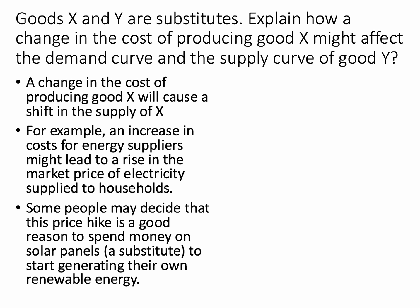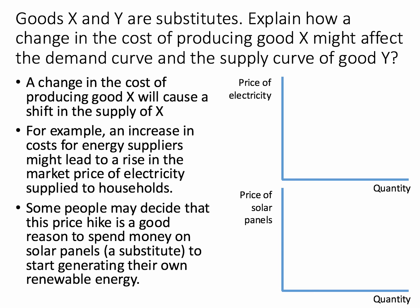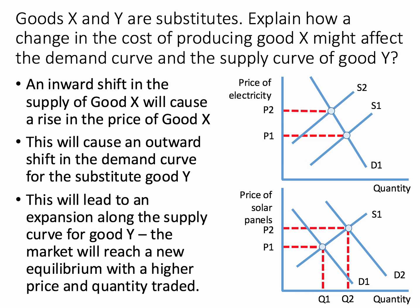Think about this in terms of diagrams — we need two diagrams: a market for electricity and a market for solar panels. First we look at the inward shift in the supply of electricity caused by higher costs. That causes the market price of electricity to go up from P1 to P2, and this should in theory cause the price of solar panels to increase as well.